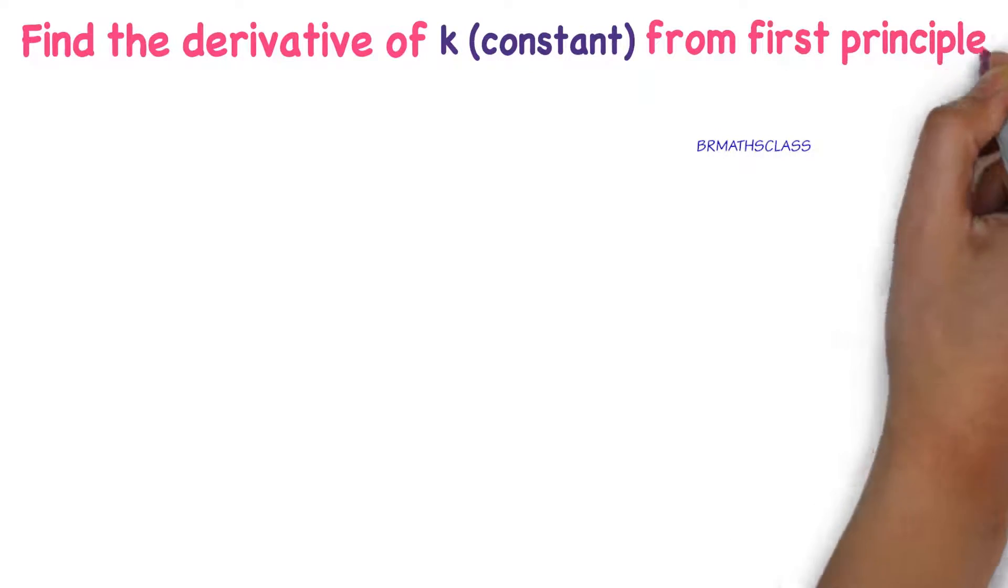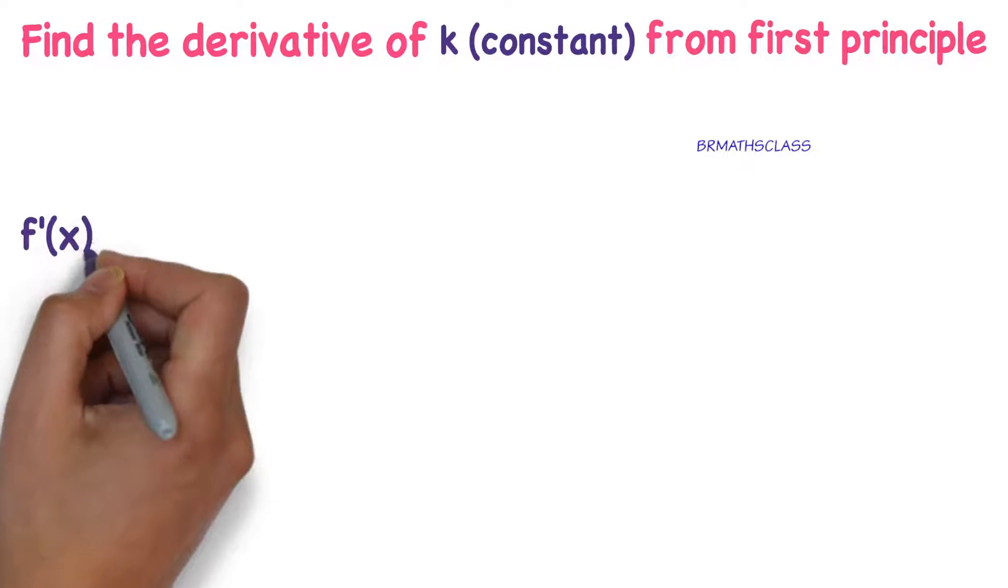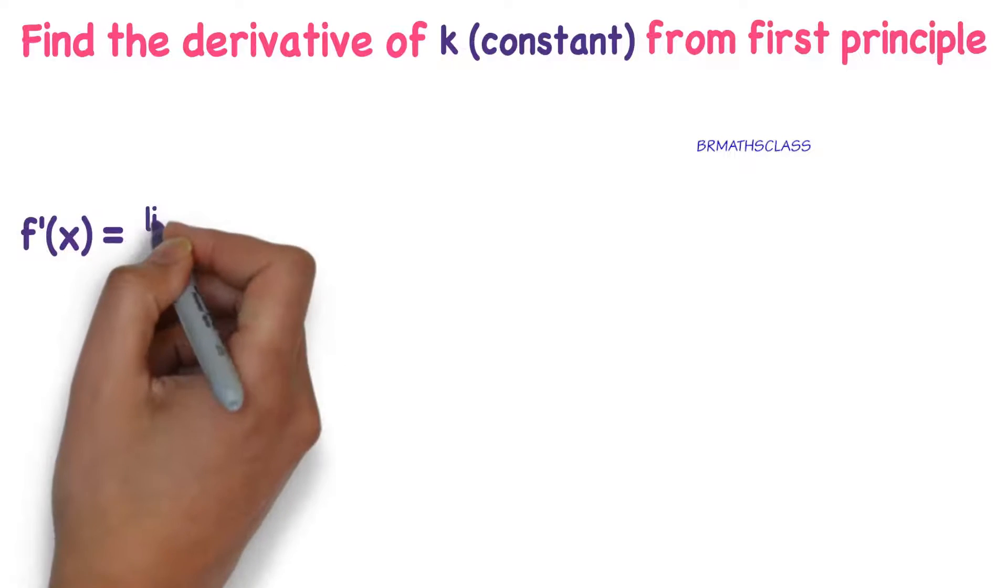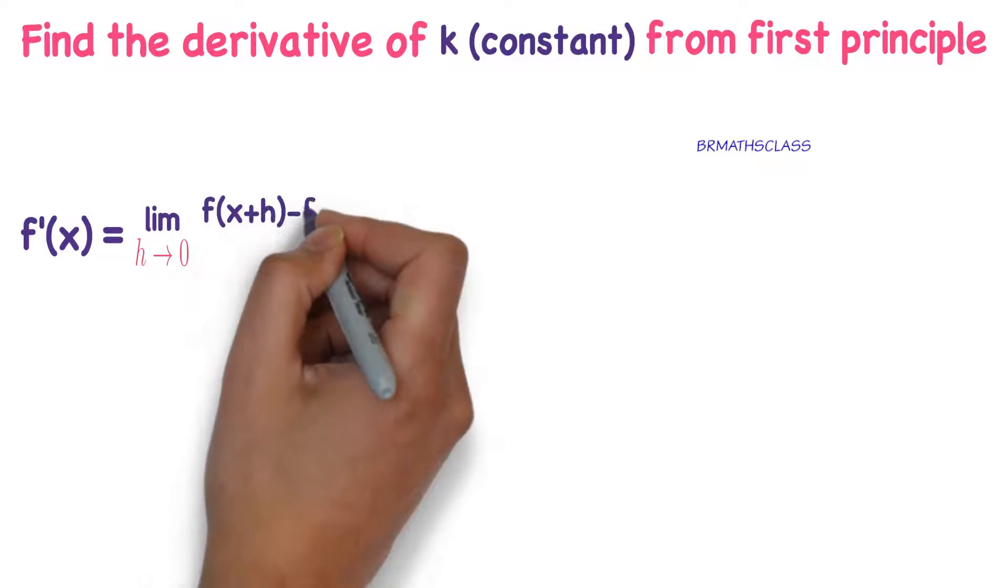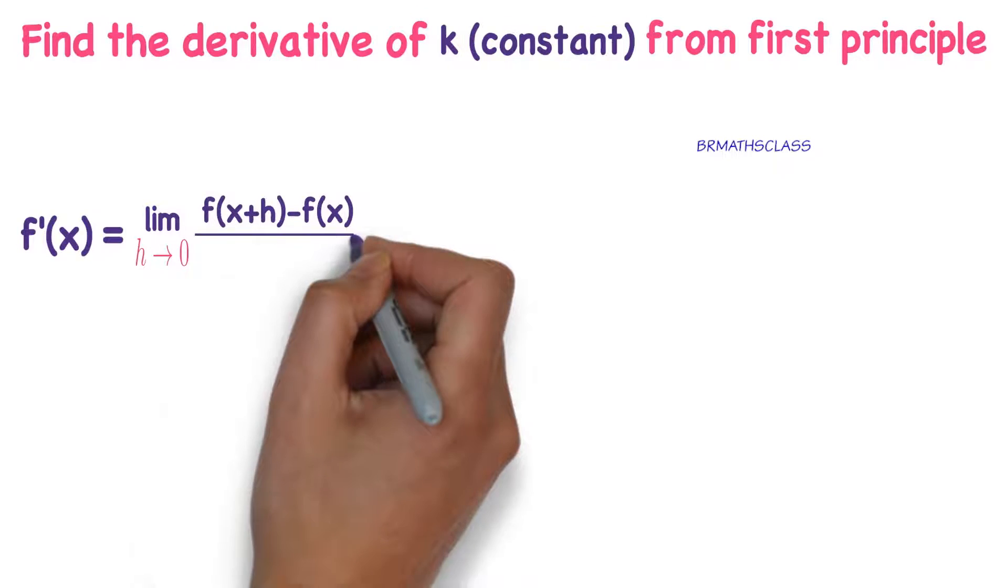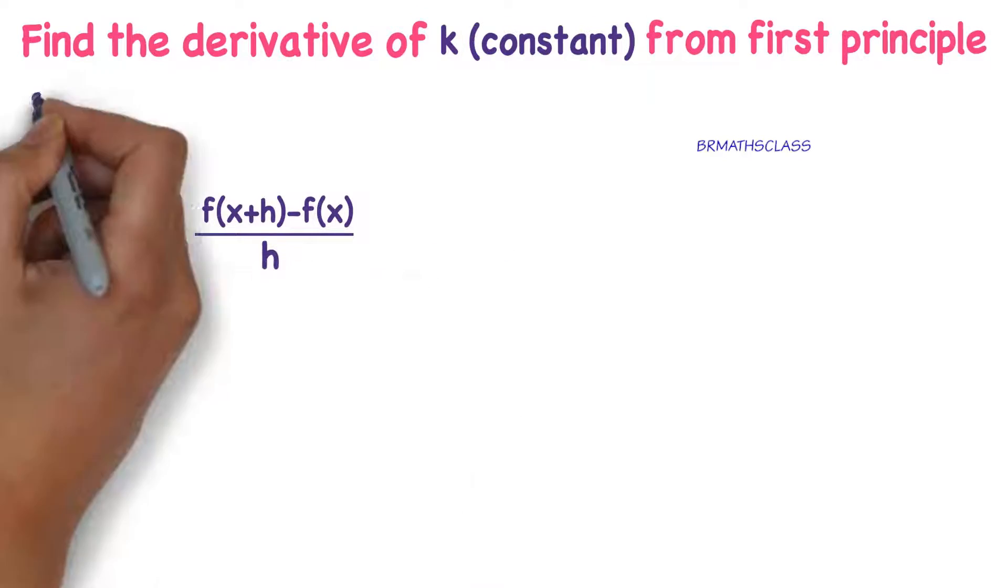We know what is first principle of derivative. F dash of x equals limit h tends to 0, f of x plus h minus f of x, divided by h. This is known as first principle of derivative.